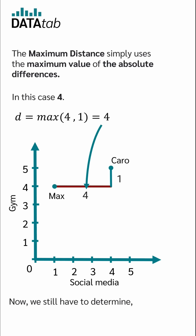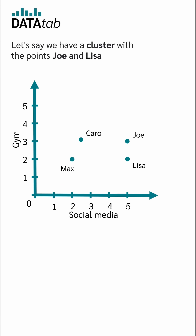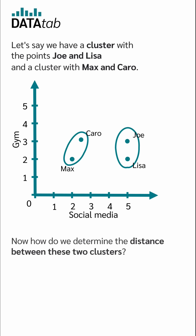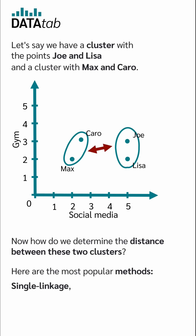Now we still have to determine how the points within a cluster are linked. Let's say we have a cluster with the points Joey and Lisa, and a cluster with Max and Caro. How do we determine the distance between these two clusters? Here are the most popular methods: single linkage, complete linkage, and average linkage.